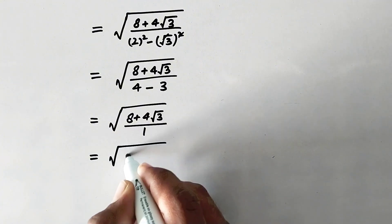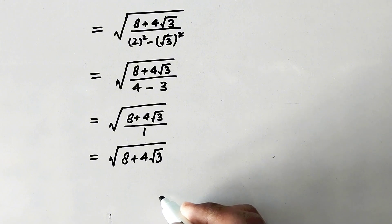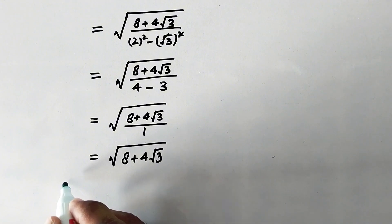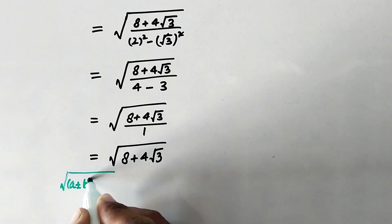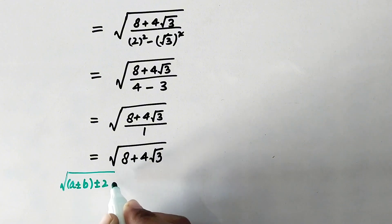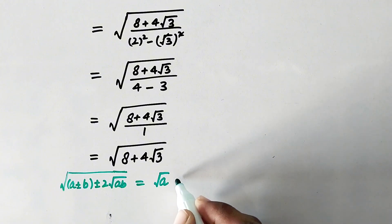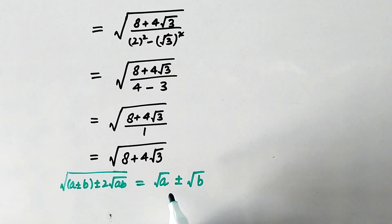Now it will be equal to square root of 8 plus 4 times square root of 3. We may express this expression in the form of an algebraic formula: if the values are present in the form square root of a plus or minus 2 times square root of a·b, then it may equal square root of a plus or minus square root of b. We will now try to express our expression in this form.